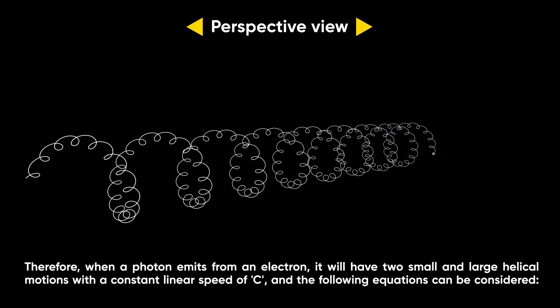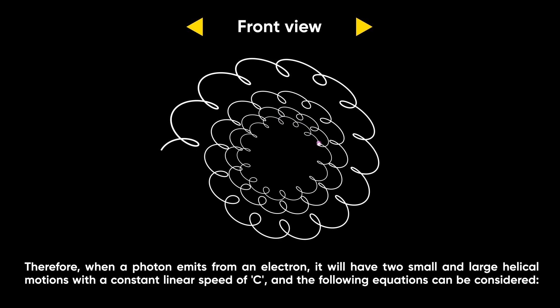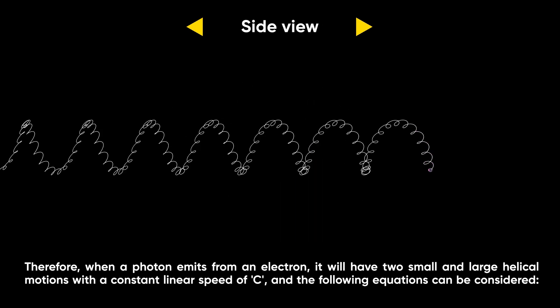Therefore, when a photon emits from an electron, it will have two small and large helical motions with a constant linear speed of c, and the following equations can be considered.